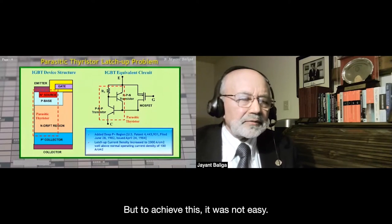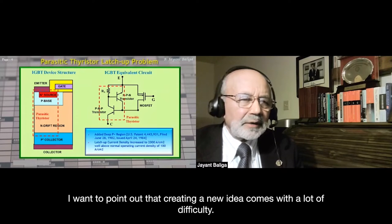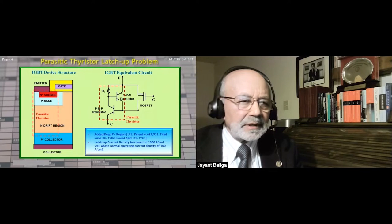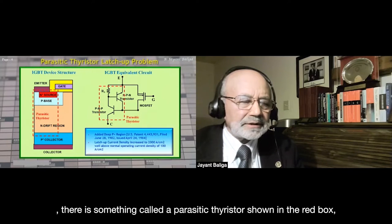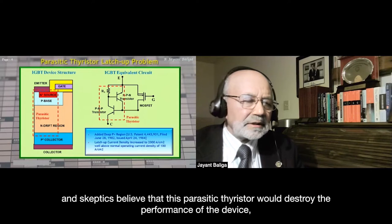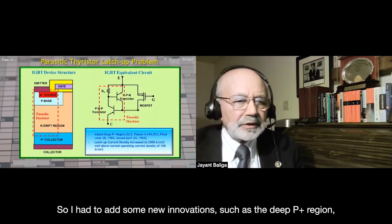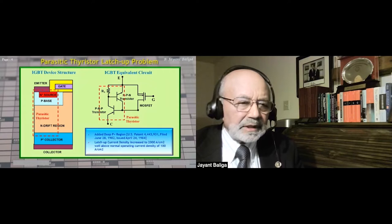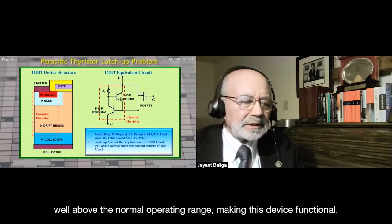Achieving this was not easy. I want to point out that creating a new idea comes with a lot of difficulty. The first problem was a parasitic thyristor inside the device shown in the red box. Skeptics believed it would destroy device performance. I had to add innovations such as the P+ region — one of my patents from 1984 — which moved the latch-up current density to a very high level, well above the normal operating range, making the device functional.